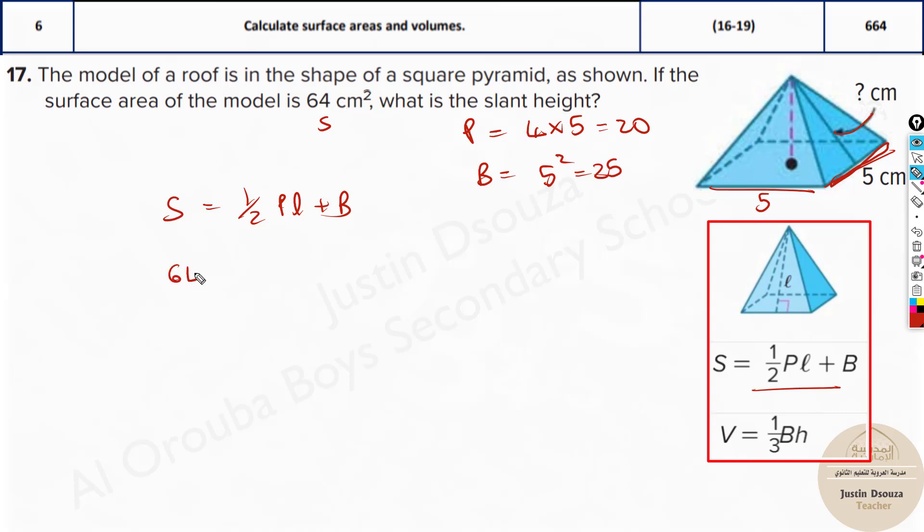We substitute: S is 64, ½ times P value is 20, times L plus B is 25. We can simplify: half of 20 is 10. Take 25 to the other side: 64 minus 25 equals 10L. That is 39 equals 10L. Divide both sides by 10 to get 3.9 equals L.